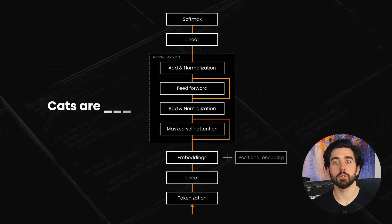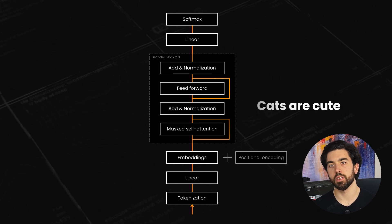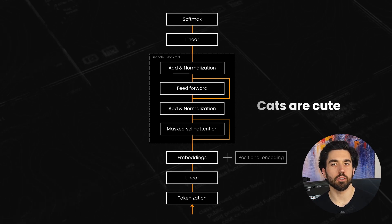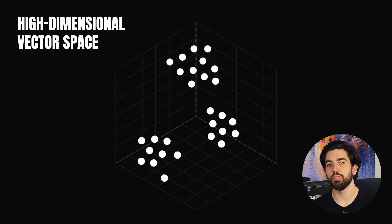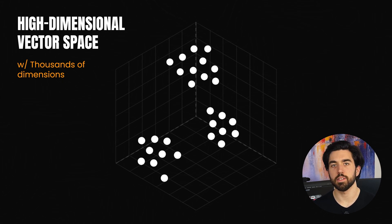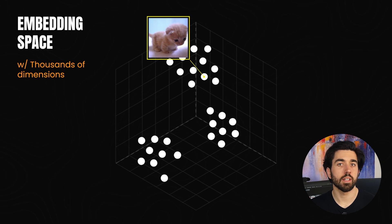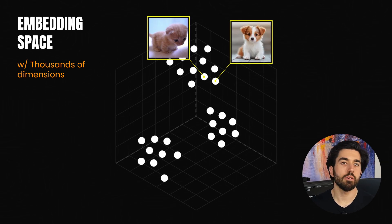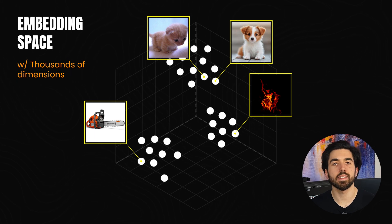We've seen that transformers spend their entire training cycle obsessively predicting the next token. But what precisely is being learned? Inside these models appears a complex internal representation, a high-dimensional vector space, just like the 2- or 3-dimensional graphs we saw in school, but in order of thousands. They are often called the embedding space, where tokens like kitten and puppy appear near each other, while chainsaw or fire wisely stay well away.